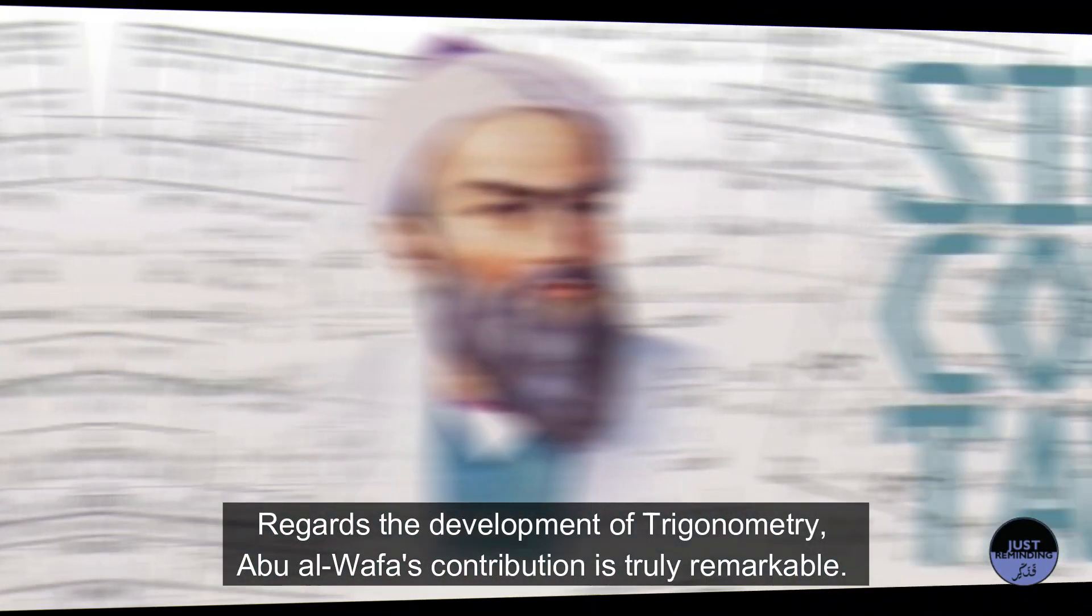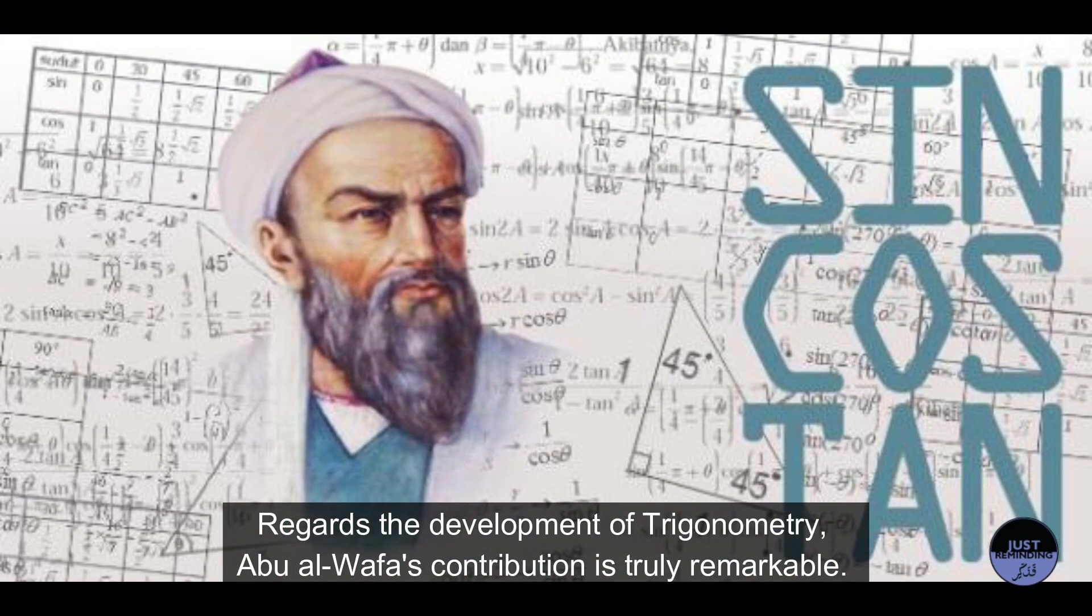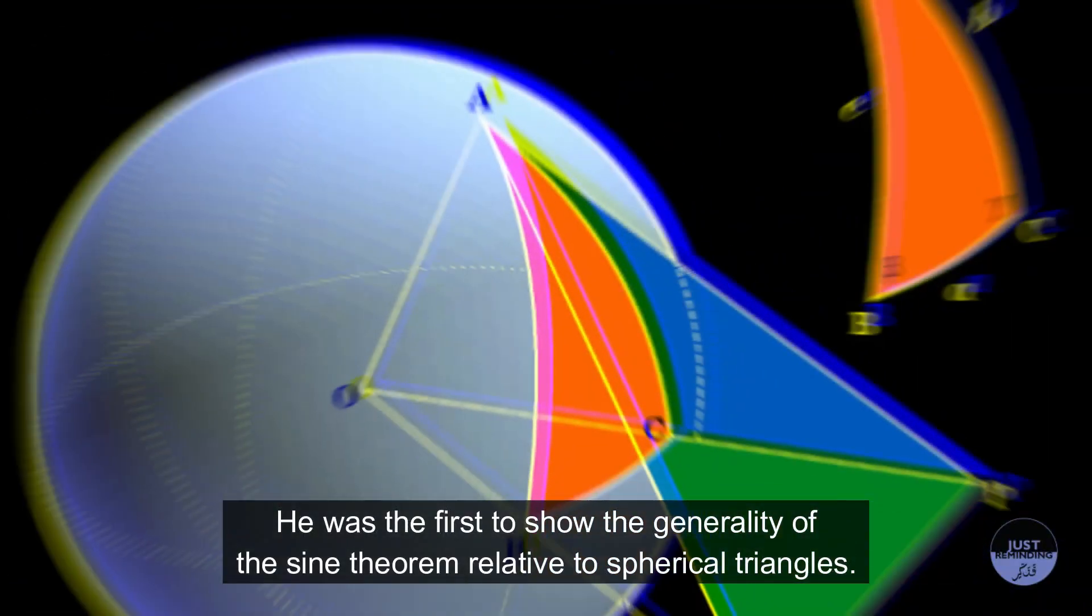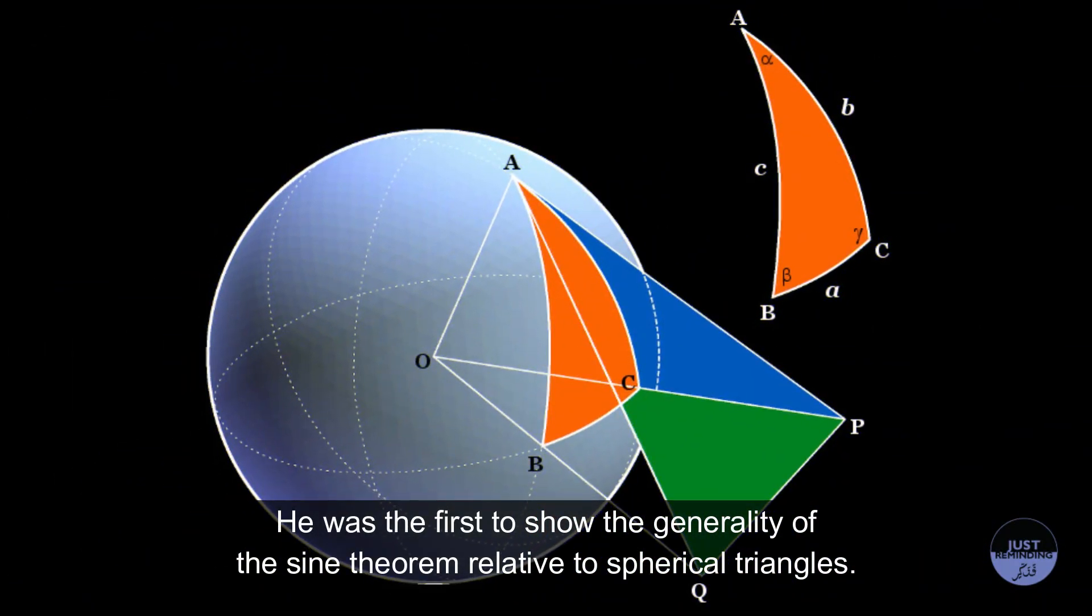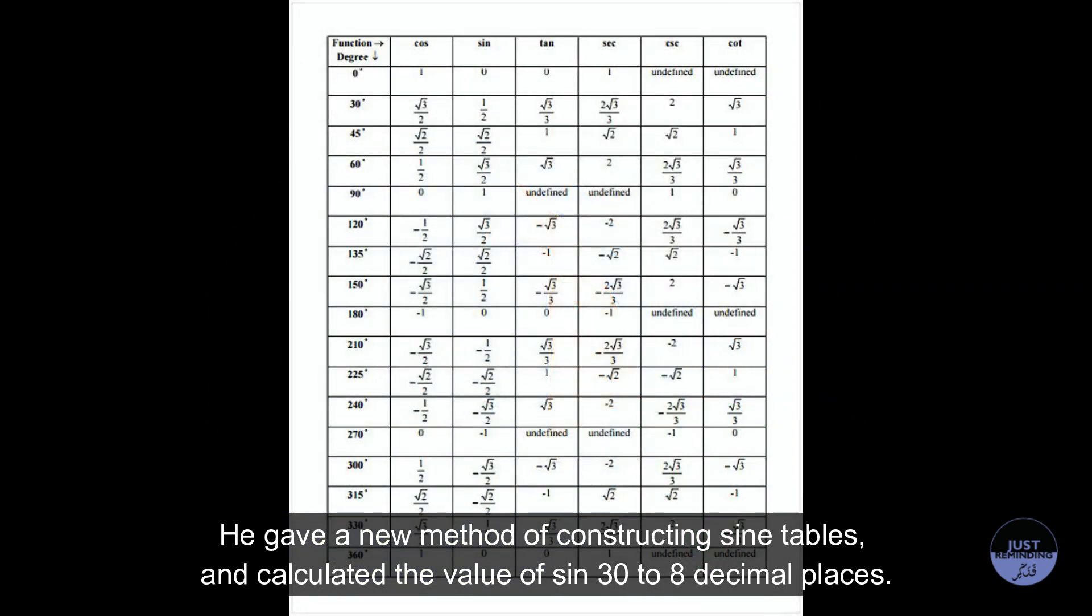Regarding the development of trigonometry, Abu Al-Wafa's contribution is truly remarkable. He was the first to show the generality of the sine theorem relative to spherical triangles. He gave a new method of constructing sine tables and calculated the value of sine 30° to 8 decimal places.